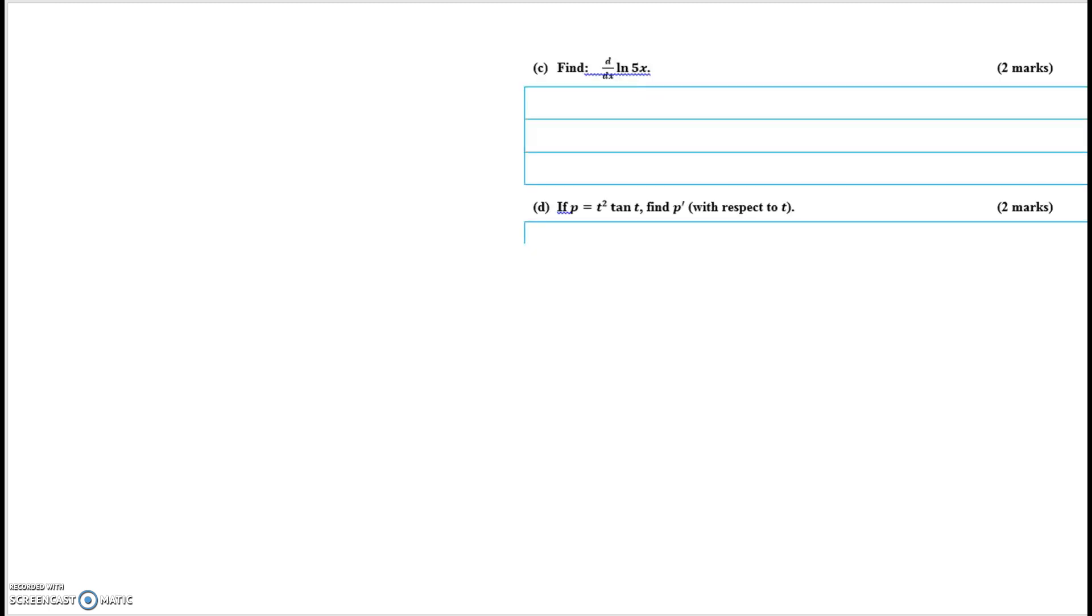Part C. Straightforward enough. You are finding the derivative of a natural log function. And remember the rule for that is it's the derivative of the bracket over the bracket, so it becomes 1 over x.